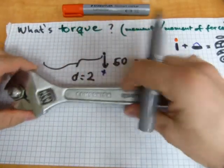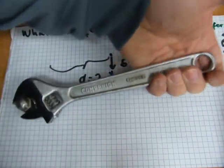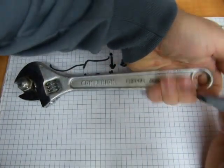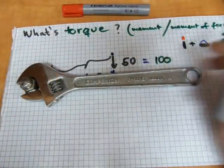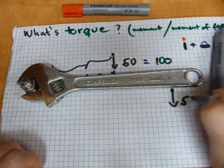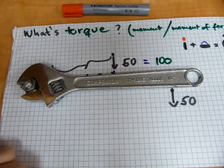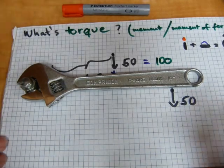With a bigger wrench, the game is going to look a little differently. You're going to grab it here at the end, the middle of your grip is going to be somewhere here. You're exerting a force of 50, because you didn't get stronger from minute one to minute two.